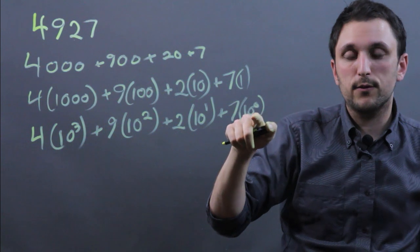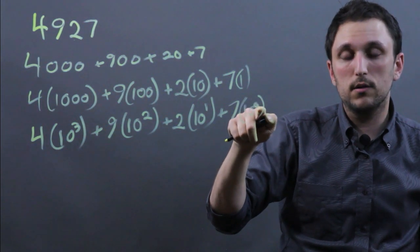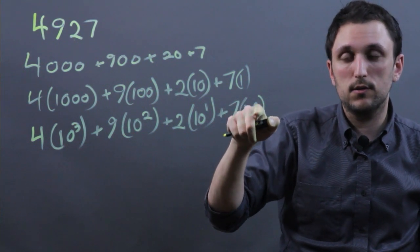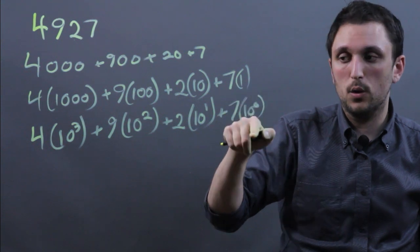And it's important not to be afraid of the 10 to the 0 because when you raise something to the 0th power, it's always 1. So 7 times 10 to the 0 is just 7 times 1, or 7.